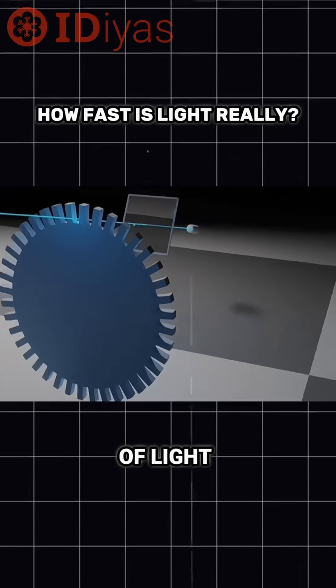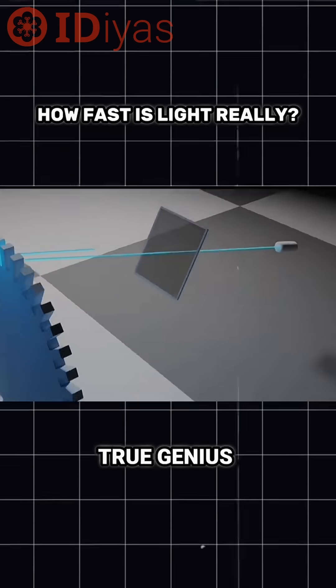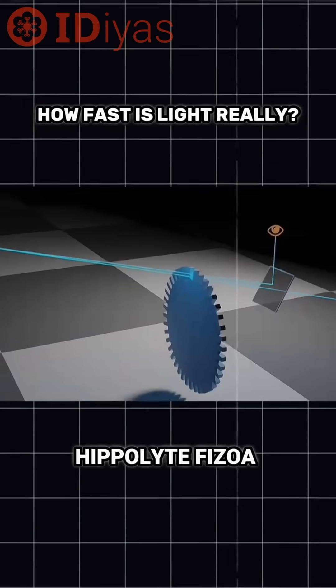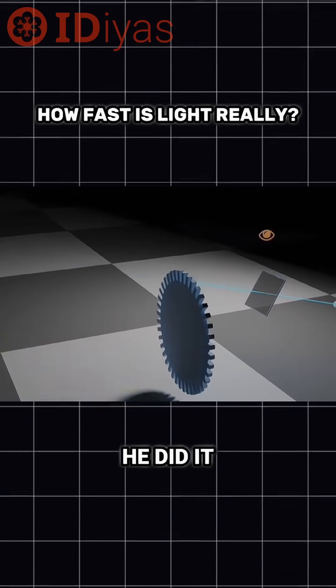The man who measured the speed of light in 1849 was a true genius. His name? Hippolyte Fizeau, a French physicist. Let's see how he did it.